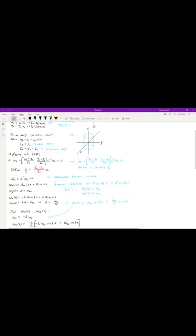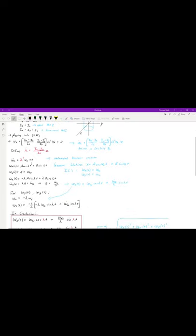If we set lambda equal to this quantity here, we can see that this equation simplifies even more to that of an undamped mass-spring-damper system, which we know the general solution of as well as the initial conditions.